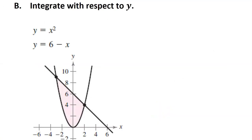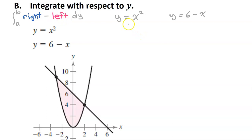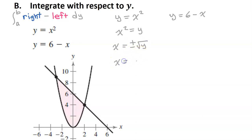For the last problem, we will do the same thing, but this time integrating with respect to y. When integrating with respect to y, we find the area by integrating the right function minus the left function. We also need to solve each equation for x. For the parabola, x squared equals y, so taking the square root gives x equals plus or minus the square root of y — two separate equations: x equals positive square root of y, and x equals negative square root of y.